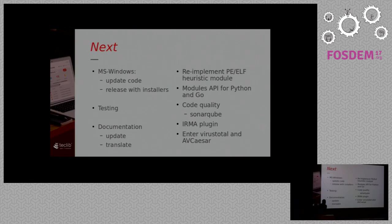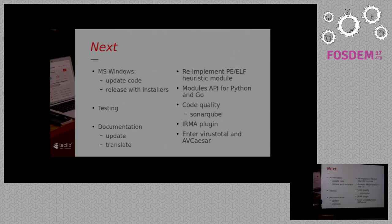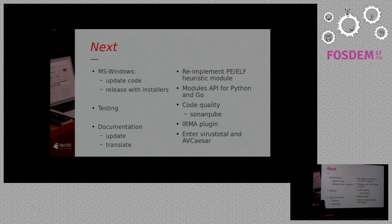What are we going to do next? We are going to make a Linux release very soon. We have a PPA on Launchpad. We don't have a Windows installer right now, and it's planned for next month. We need more testing and documentation. We would also like to re-implement the current heuristic module for binary scanning and probably integrate it better with YARA rules. And, as I said, we want to provide an API to allow people to write scan modules in Python or Go.